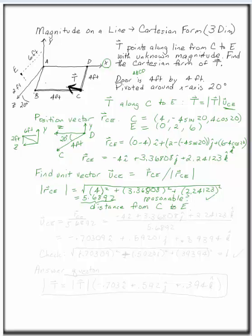Now, the unit vector is RCE, the position vector, divided by this magnitude. So we have minus 4i, plus 3.36808j, plus 2.24123k, divided each of these by this magnitude. Once you've done that, pull out your calculator again, we have now a unit vector from C to E.